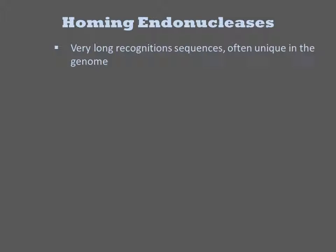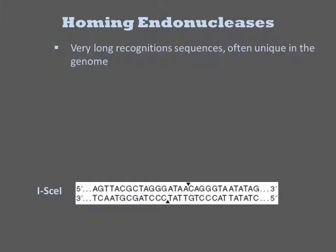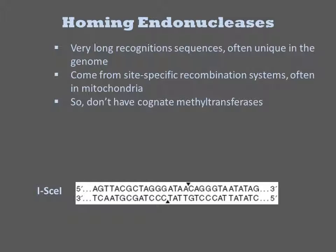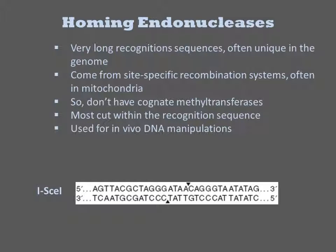Homing endonucleases are restriction enzymes that cleave a very long and specific recognition sequence. For example, ISceI recognizes a 30 base pair sequence. They come from site-specific recombination systems, often from mitochondria. They don't have cognate methyltransferases. Most of them cleave at a specific site internal to the recognition sequence, and often they are so specific that they cleave uniquely once within a genome. These enzymes are not extensively used in vitro, but they have been actively pursued for DNA manipulations in vivo. They can be used to create unique double-strand breaks in the genome that stimulate DNA repair and recombination.